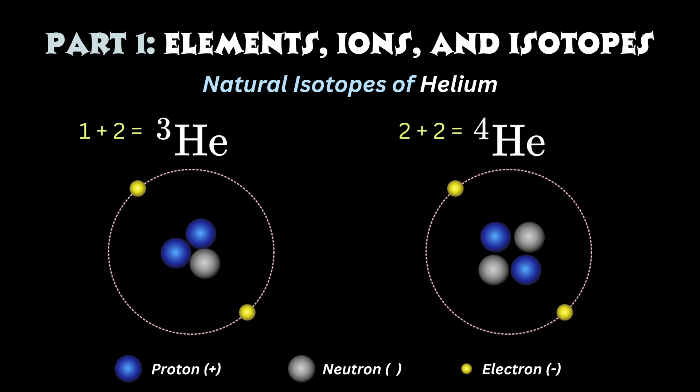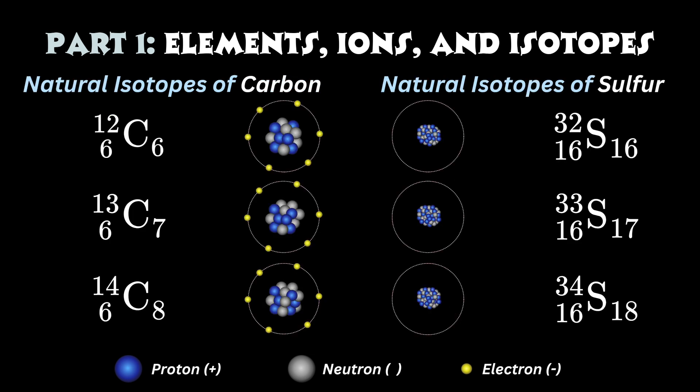Let's review the naturally occurring isotopes of a few more elements and learn the full conventional notation. Carbon and sulfur have three isotopes each: 12, 13, and 14 for carbon; 32, 33, and 34 for sulfur. Because carbon always has six protons, denoted by the lower left subscript, ¹²C has 12 minus 6 equals 6 neutrons, ¹³C has 7 neutrons, and ¹⁴C has 8 neutrons. Given that sulfur has 16 protons, what are the neutron counts for ³²S, ³³S, and ³⁴S?